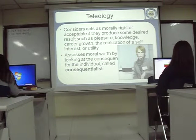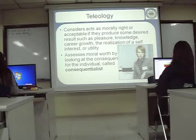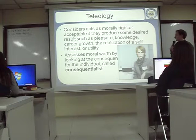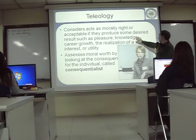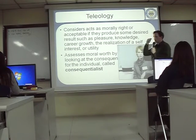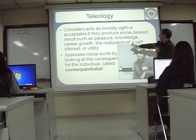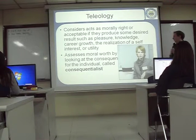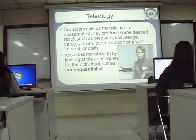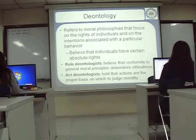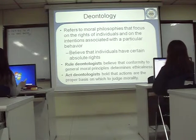One of the main moral philosophies is consequentialism: what gives the best consequence is the best decision. Something is morally right or acceptable if it produces the desired result — such as pleasure, knowledge, career growth, or self-interest. Basically, which decision gives the best result for me? That's the correct one according to consequentialism. On the other hand, ontology focuses on the rights of individuals.